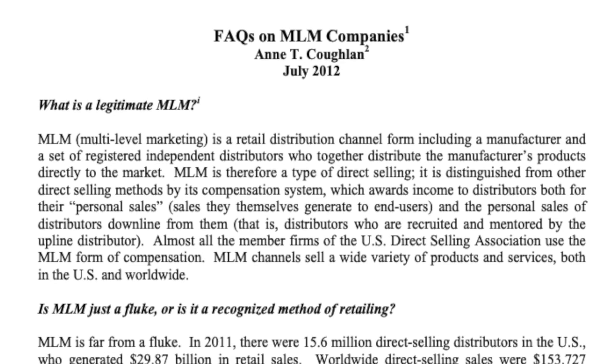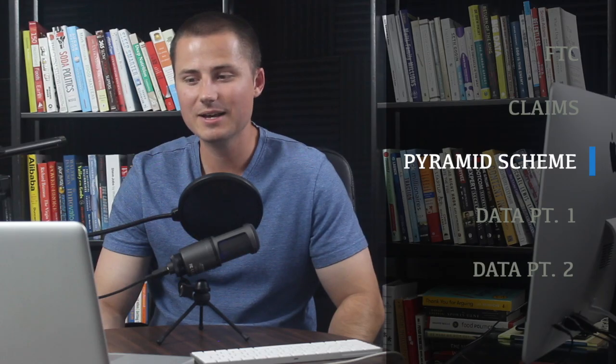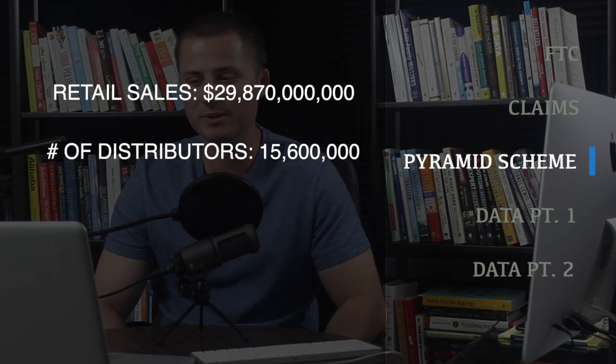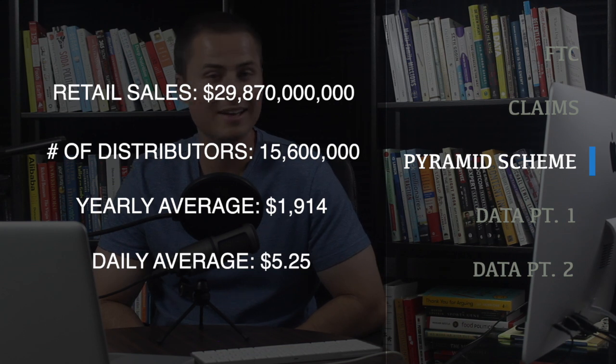MLM distributors generated $28.87 billion in the US in 2011. $28.87 billion in revenue. What an opportunity for people to become their own business owners. There were only 15.6 million direct selling distributors, so there must have been a large profit on average for these be your own bosses. Well, if you bring out your simple calculator, then you'll see that the average revenue for each distributor is $1,914 for the year. That averages to $5.25 every day. That's not much of a living. But what if the numbers are actually much worse?